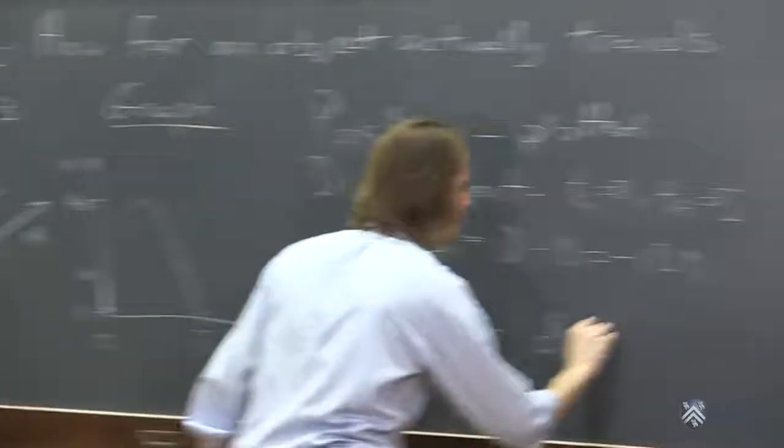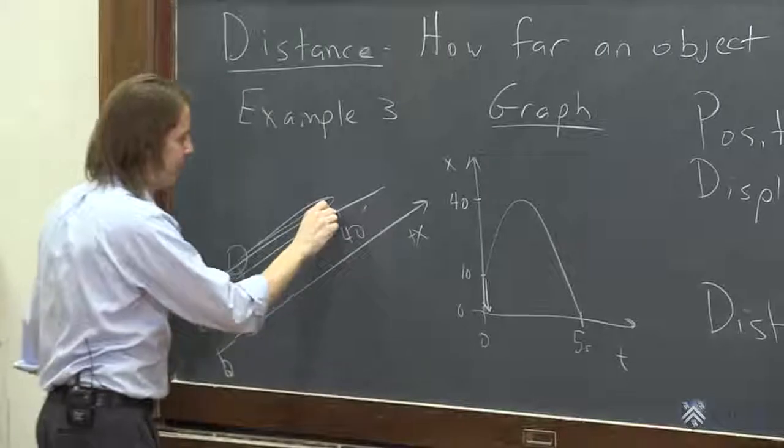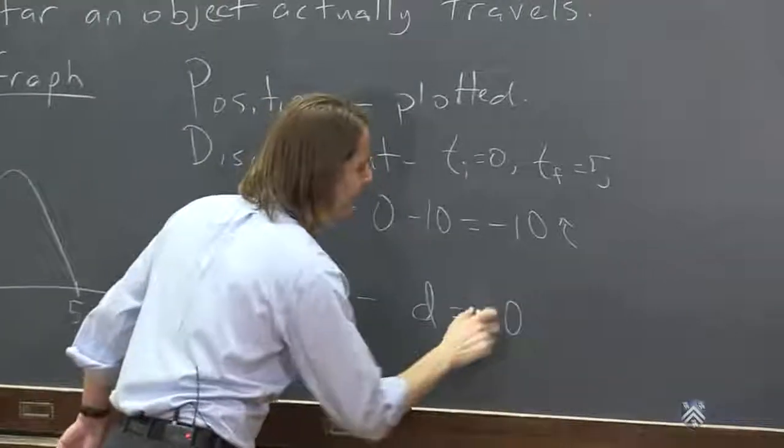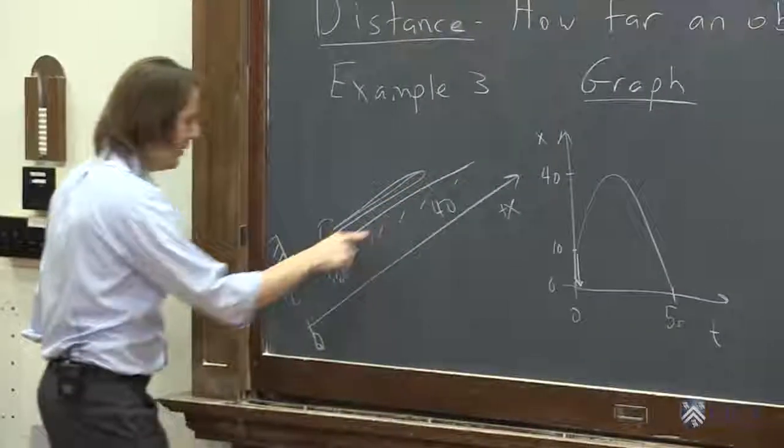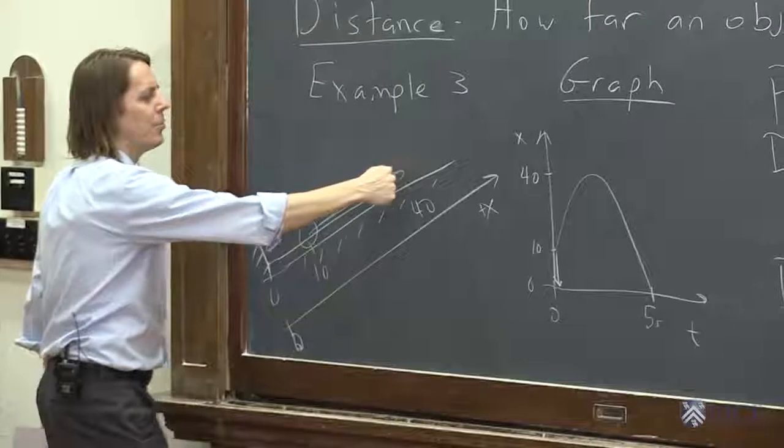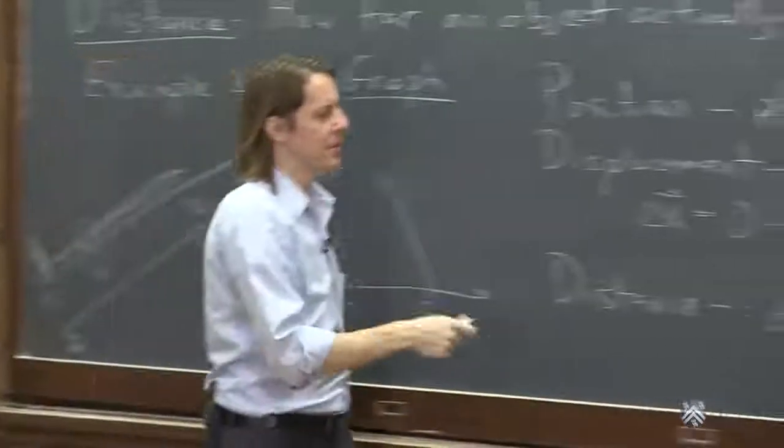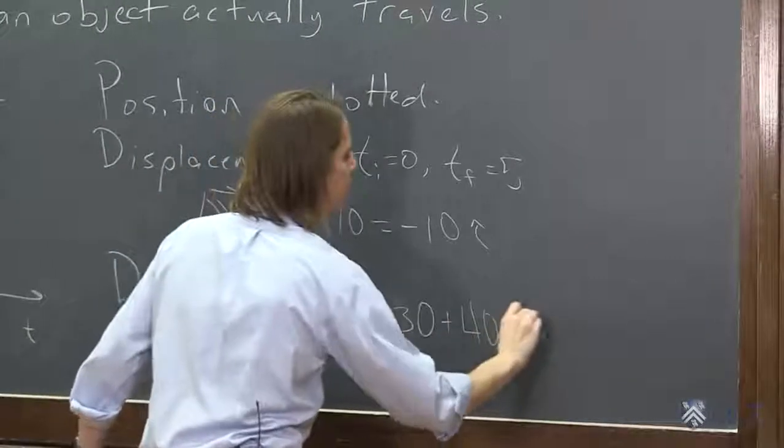So he went from 10 to 40. So that was a distance of 40. And then he turned around and went from 40. I'm sorry. He went from 10 to 40. That's a distance of 30. He went 30. And then he turned around and went back to zero. He went another 40. But he turned around and went the other way, but you don't make it negative. Distance doesn't care about positive or negative. It just cares about how far you went. So he went 30 plus 40. He went 70.